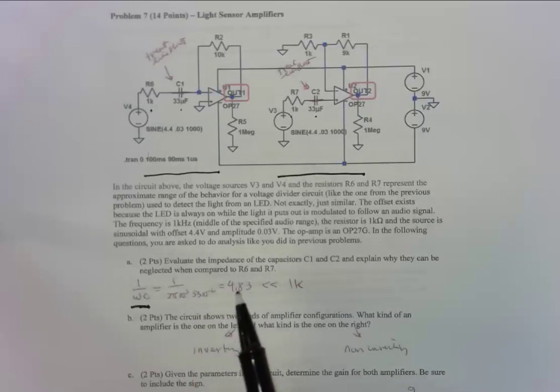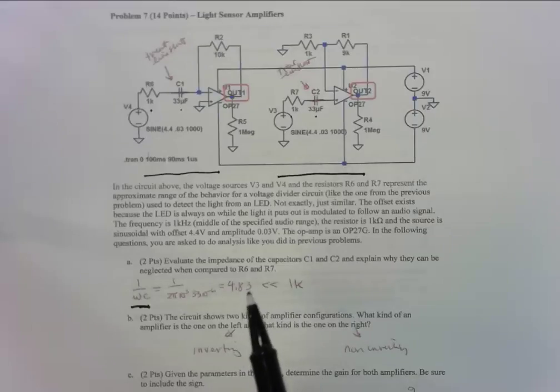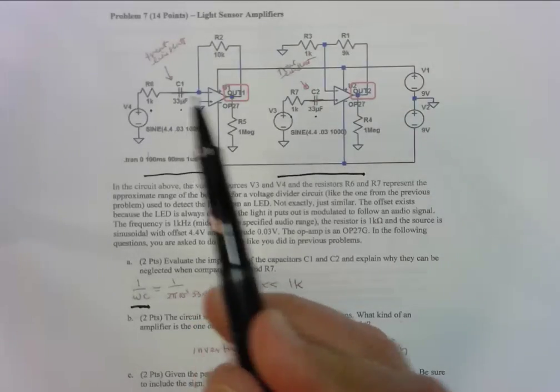I plug the numbers in because we've got the value of the capacitance and the frequency, which is one kilohertz in the middle of the specified audio range. I get 4.83, not 4.83K but 4.83, which is very small compared to 1K. So we're going to treat this as zero and replace both capacitors as short circuits.